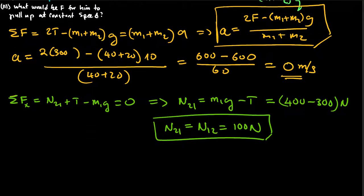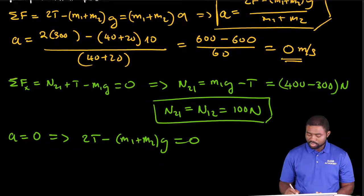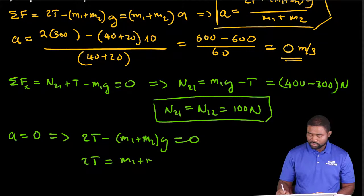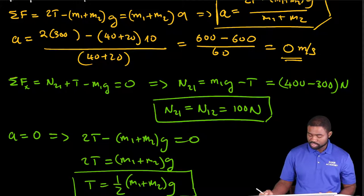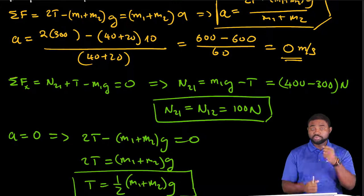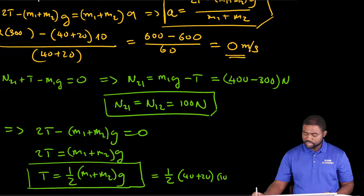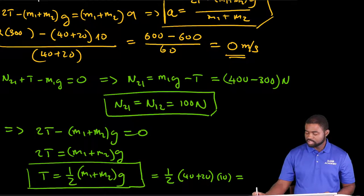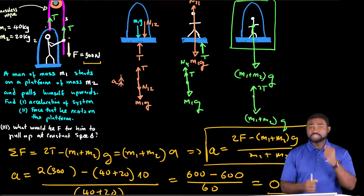Since A = 0, this means 2T minus (M1 + M2)G = 0, so 2T equals (M1 + M2)G, and T equals one-half times (M1 + M2) times G. Substituting: T = ½ × (40 + 20) × 10 = ½ × 600 = 300 newtons. This is the tension — and hence the force he applies — that causes the system to be pulled up at a constant speed.